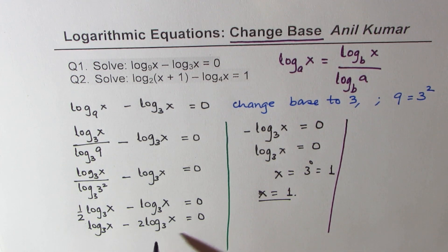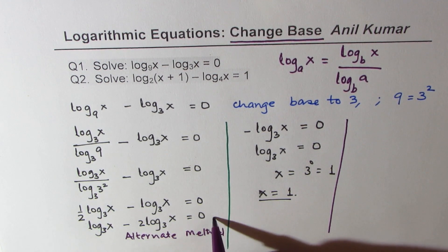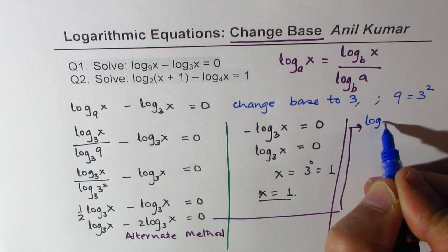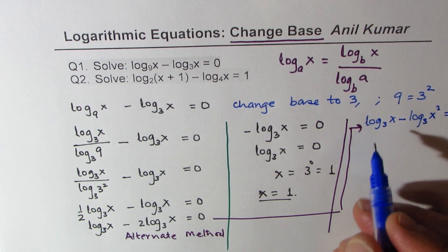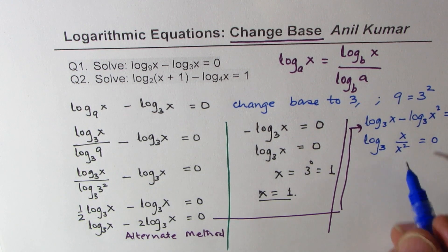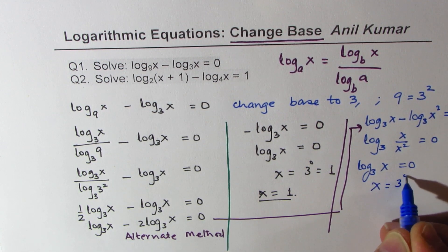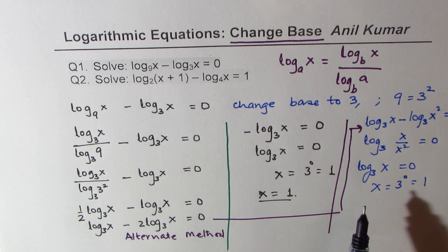There is an alternate method as well. After the step log base three of x minus two log base three of x, we can apply the power law to rewrite it as log base three of x minus log base three of x squared equals zero. Applying the quotient law of logarithms: log base three of (x over x squared) equals zero, giving the same equation. So x equals three to the power zero, which is one.